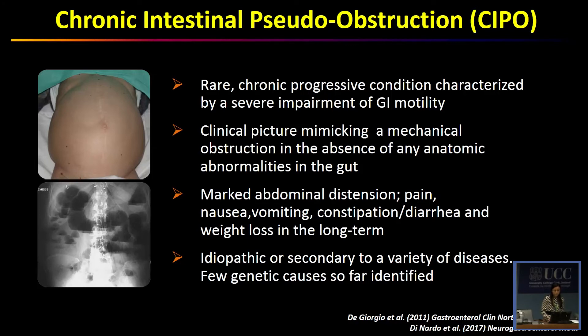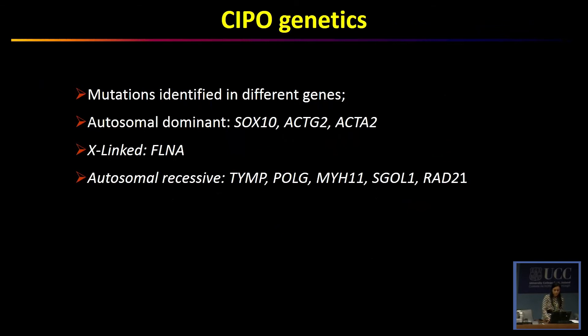Regarding the genetic point of view, we know that CIPO is related to different mutations identified in different genes, such as autosomal dominant genes like SOX10, ACTG2, and ACTA2; X-linked like FLNA; and autosomal recessive genes like TYMP, POLG, MYH11, SCOL1, and RAD21.